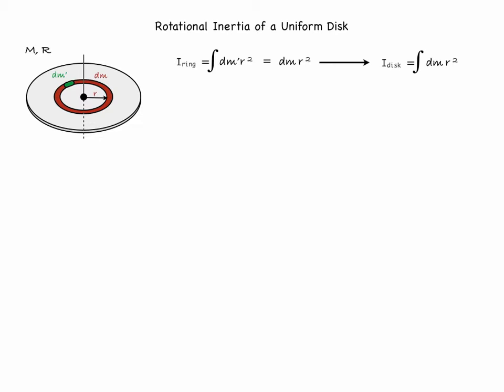Once we know the rotational inertia of that ring, we can integrate over all the rings to obtain the rotational inertia of the entire disc. It is clear, however, that rings with larger radius will have larger mass and so we will need to find exact relationship between the mass and the radius of a ring before we can proceed with the solution of the integral dm r squared.